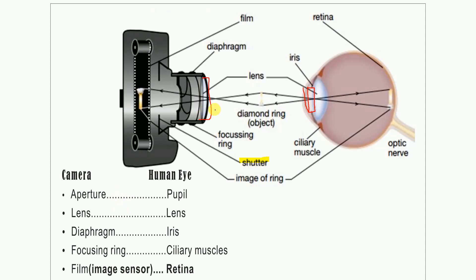Next is the lens. The lens in the camera focuses light so that a clear image is formed on the film. In the same way, there is a lens in the human eye that performs the same function of focusing.